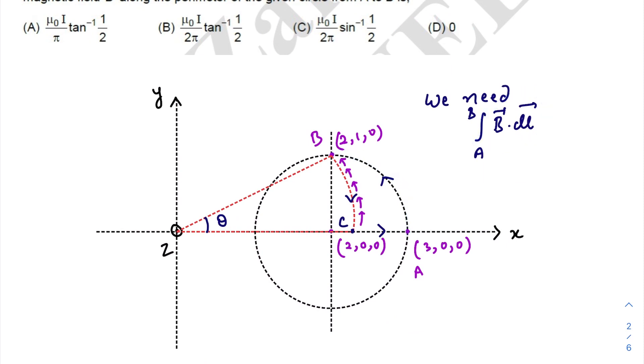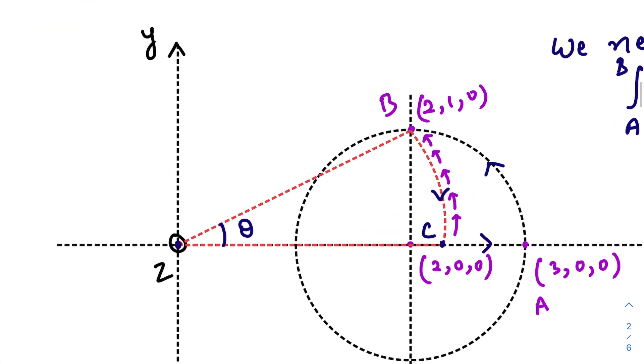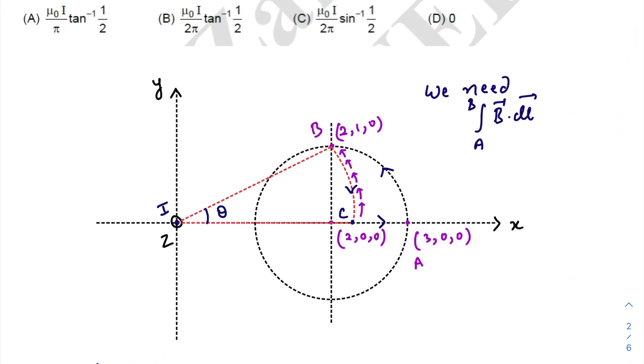The current is coming towards our face at the positive z-axis. I am interested in finding B dot dl for this path. I am taking a loop because Ampere's law is favorable for a loop, and my loop is A to B, B to C, and C to A again.